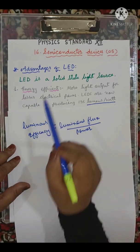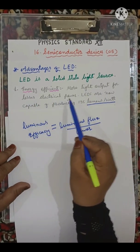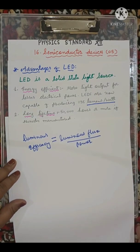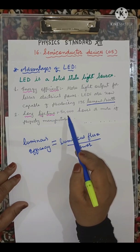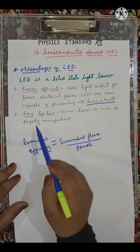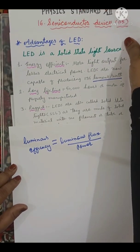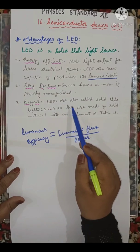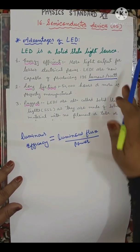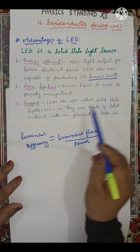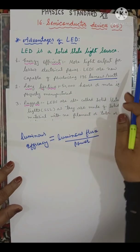Second: long lifetime - 50,000 hours or more if properly manufactured. Third point: rugged. LEDs are also called solid state light (SSL) as they are made up of solid material with no filament, tube, or bulb to break.